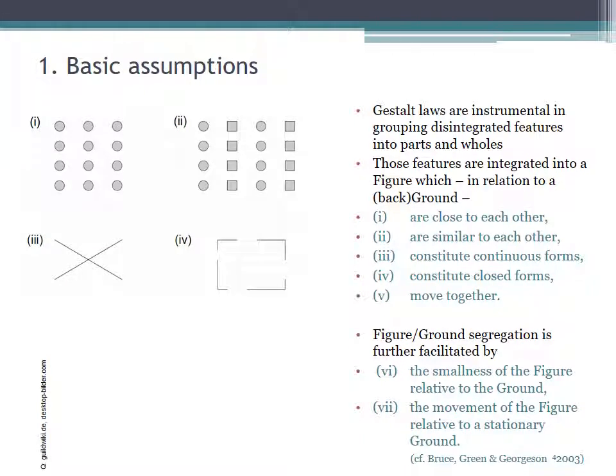These disintegrated visual features must be integrated into percepts of whole objects, or figures, in relation to a background, or ground. The so-called Gestalt laws are instrumental in grouping features into wholes. And those features are integrated into a figure which, in relation to a ground, are close to each other, are similar to each other, constitute continuous forms, constitute closed forms, and move together.